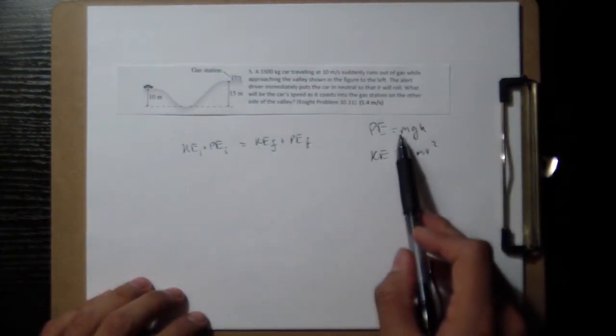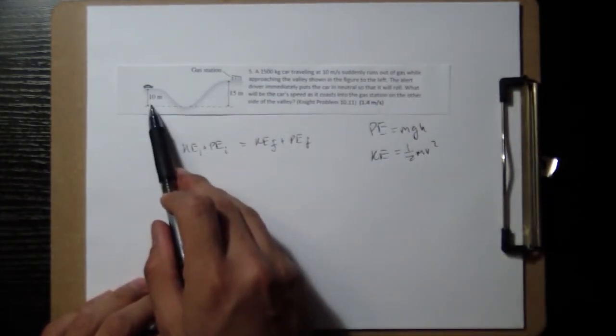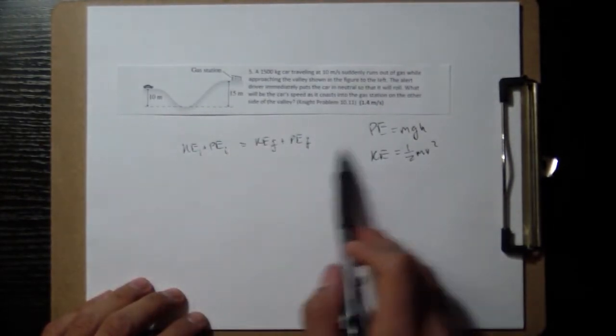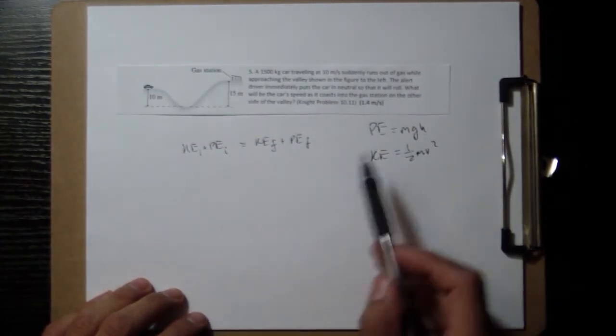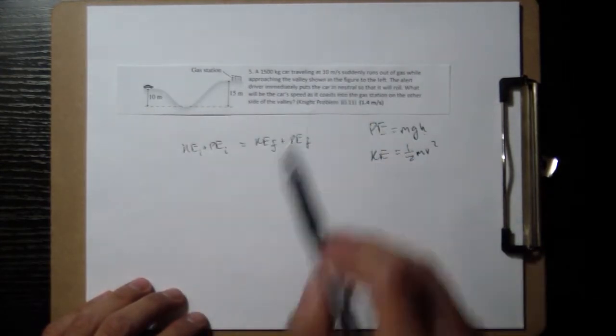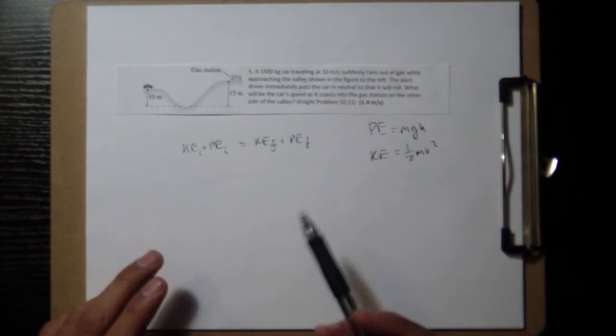We know the potential energy here and here we can calculate it because we have the mass of the car, we know what g is, and we know how high each location is. Additionally we know the kinetic energy at the beginning because we know the velocity, and so what we want to know is the velocity at the end, so we can figure that out.